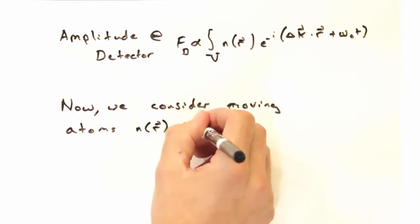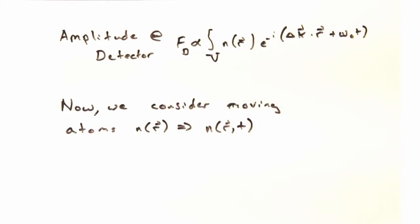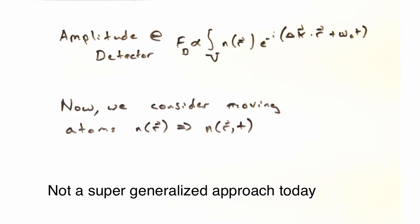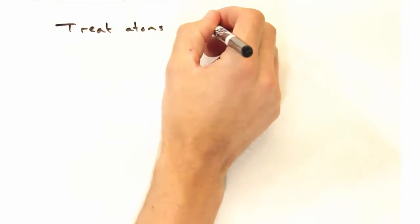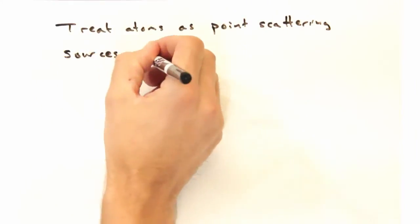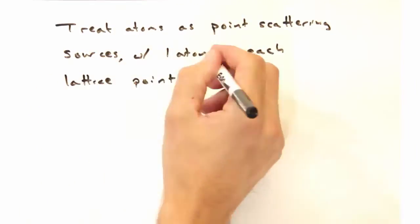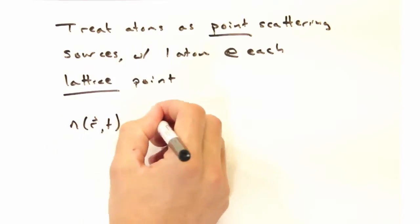So today we're going to consider moving atoms where the scattering density n now has a time dependence. Rather than developing a generalized approach for any n of r and any time variation, we're going to make a couple big approximations today. First, we're going to treat the atoms as point scattering sources with one atom at each lattice point.